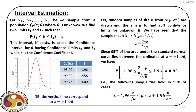If this interval exists, we call it a confidence interval for θ, and the two extremes t₁ and t₂ are the confidence limits. The probability of θ lying between t₁ and t₂, which is equal to c, is called the confidence coefficient.